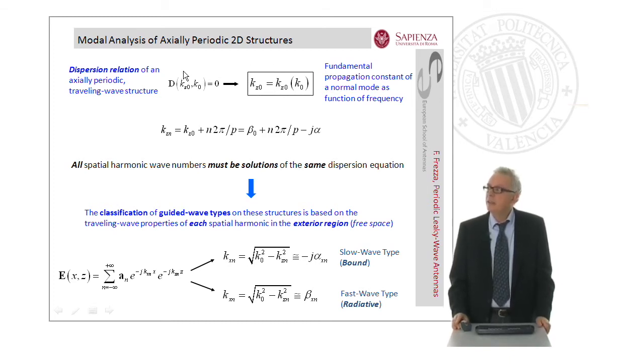We can consider the dispersion relation of an axially periodic traveling wave structure. When we solve it, we obtain the fundamental propagation constant of a normal mode as a function of frequency. However, take into account that all spatial harmonic wave numbers must be a solution of the same dispersion equation. The classification of guided wave types on this structure is based on the traveling wave properties of each spatial harmonic in the exterior region in free space.